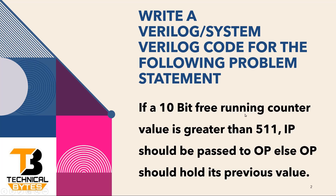A 10-bit free running counter can count up to 1023. If its value is greater than 511, input ip should be passed to output op; else output op should hold its previous value — that means if the value is less than or equal to 511, the output should equal its previous value.